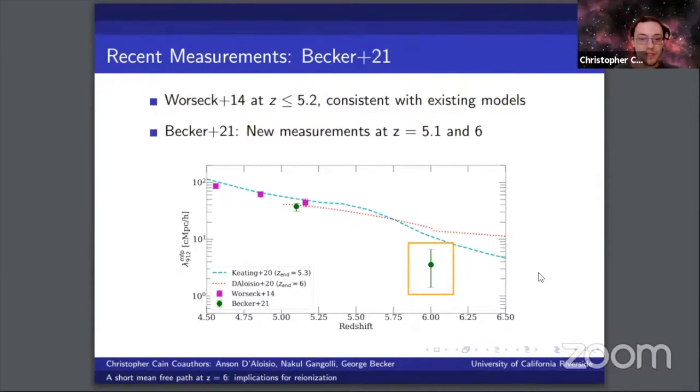Now, the new measurements were recently published of the mean free path from Becker et al. 2021, and these measurements changed the story a little bit. Their measurement at redshift 5.1 is consistent with existing measurements and theoretical predictions.